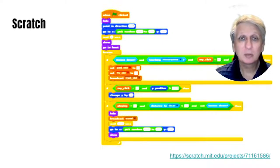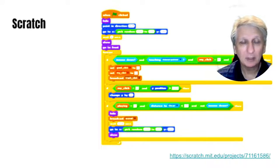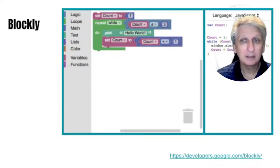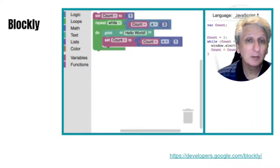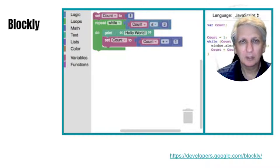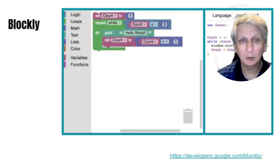Scratch is probably the most common block-based programming language and has been used for many years — it's a common introduction to programming for many students. But there are also other alternatives. Blockly has been developed by Google and it has the advantage of being able to translate into text-based languages such as JavaScript and Python, where you can take the block-based program and see what the equivalent text-based program would be, and make adjustments to either and see how that affects both formats.